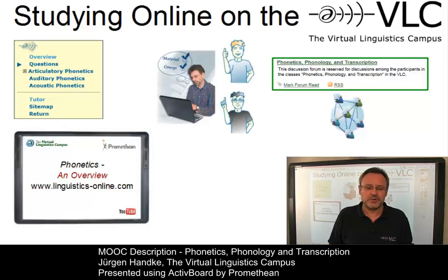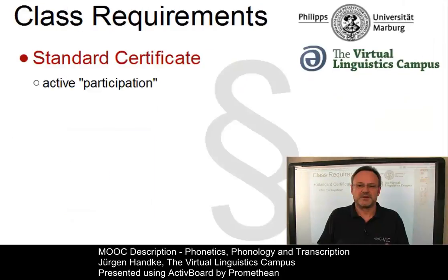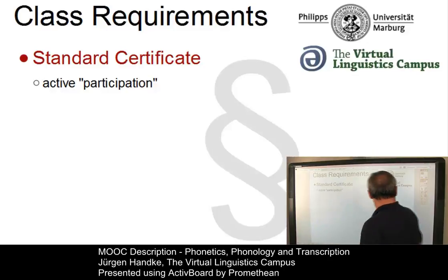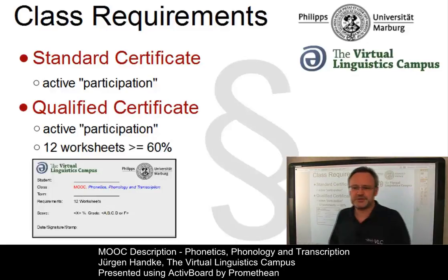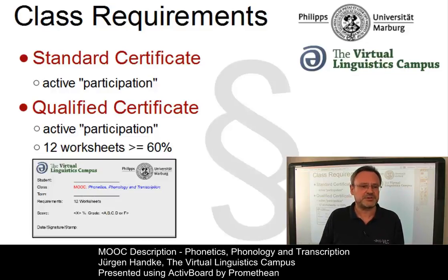You may want to know what you have to do in order to get a qualified certificate for this class. All participants will receive a standard certificate for regular and active participation — we won't check it though, we just rely on you. To be given a qualified certificate, we want you to do the worksheets, one for each e-learning unit. If the overall score is 60% or higher, you will receive such a qualified certificate. If not, we will just confirm your participation with a standard certificate.